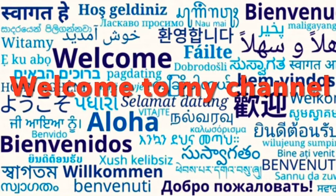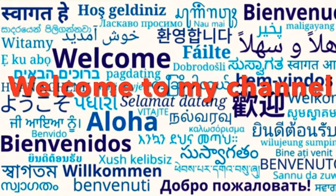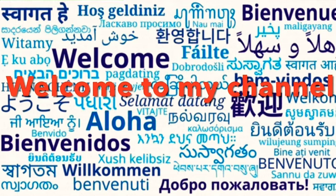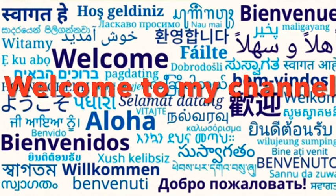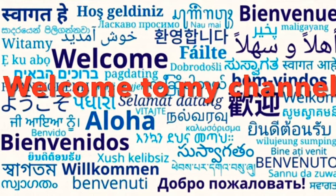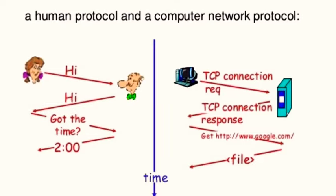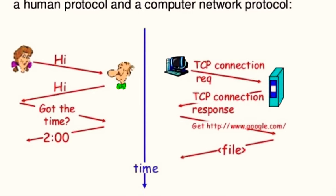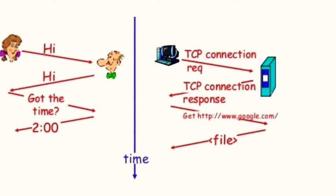Ever wondered how computers communicate with each other? Just as we humans have languages and rules for interaction, computers too have their own way of chatting. This digital chit-chat happens through something known as computer protocols.